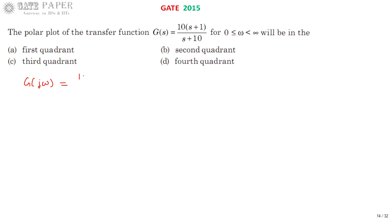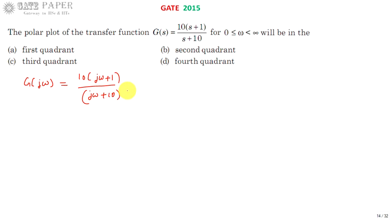G(jω) = 10(jω + 1) / (jω + 10). The quadrant is mainly decided by the phase angle. From the phase angle, we will determine whether it is in the first, second, third, or fourth quadrant. So the phase of G(jω) is the key for this question.